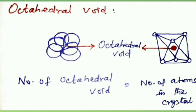Octahedral void: The empty space between three spheres of one layer and three spheres of the next layer is called an octahedral void. The number of octahedral voids is equal to the number of atoms in the crystal.